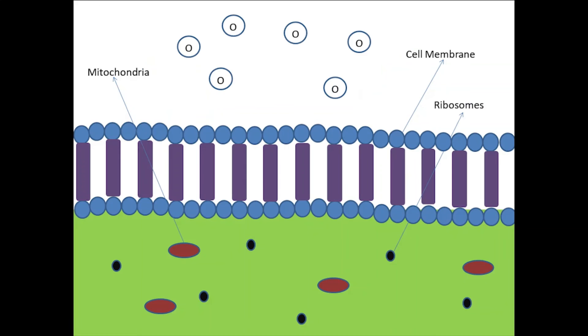An example of diffusion in our body is when red blood cells release carbon dioxide and take in oxygen. As you can see, these are the oxygen particles going in through the cell membrane and the carbon dioxide particles coming out.